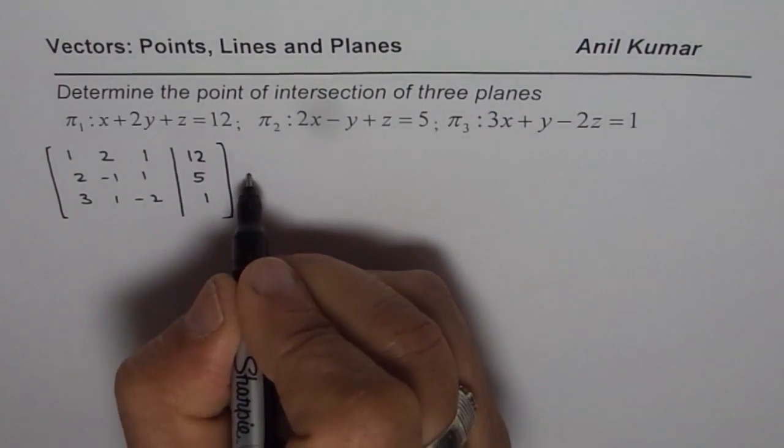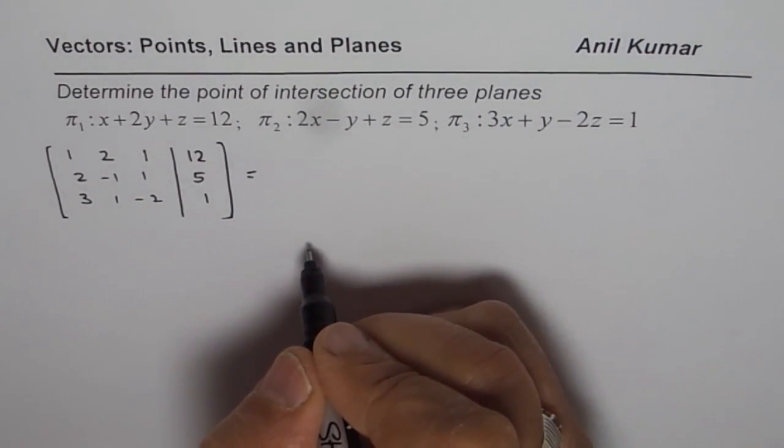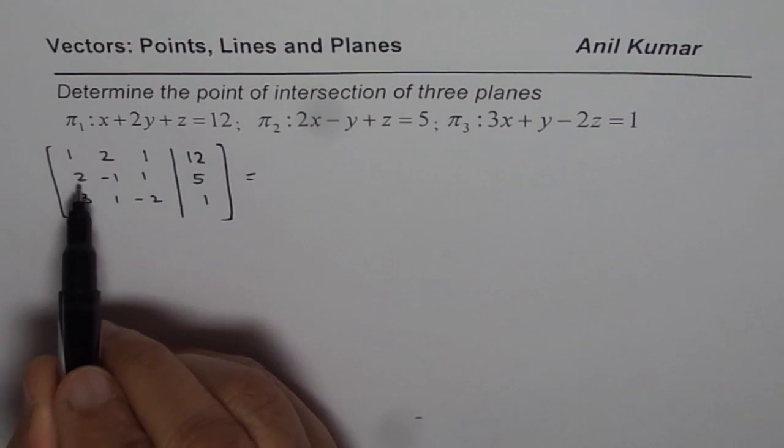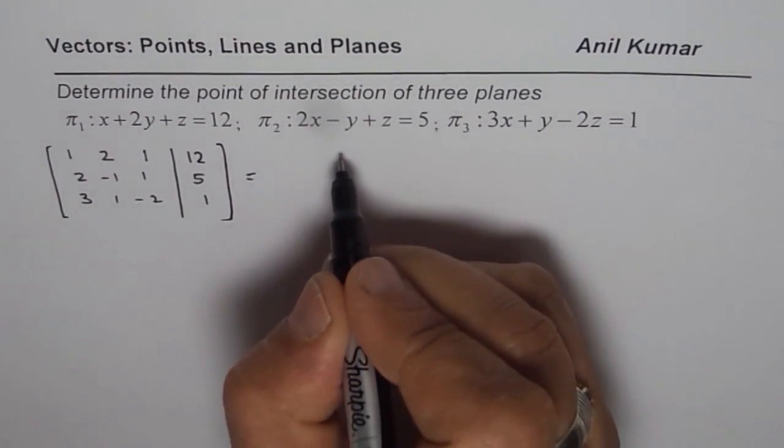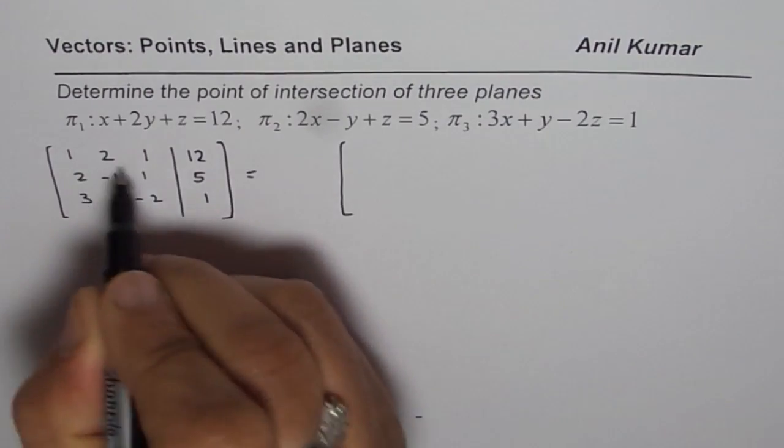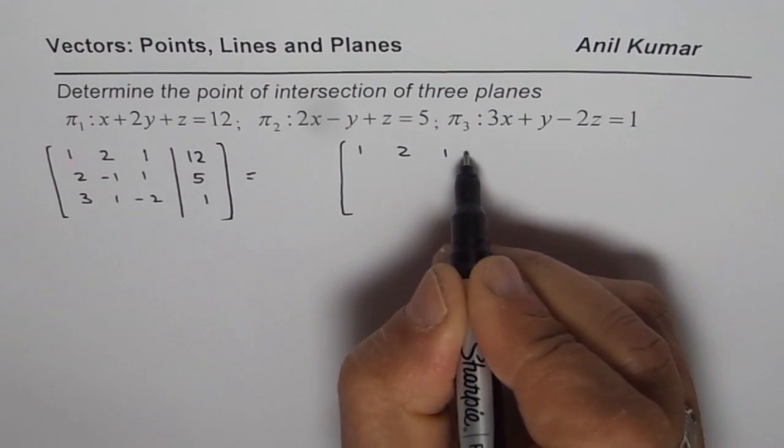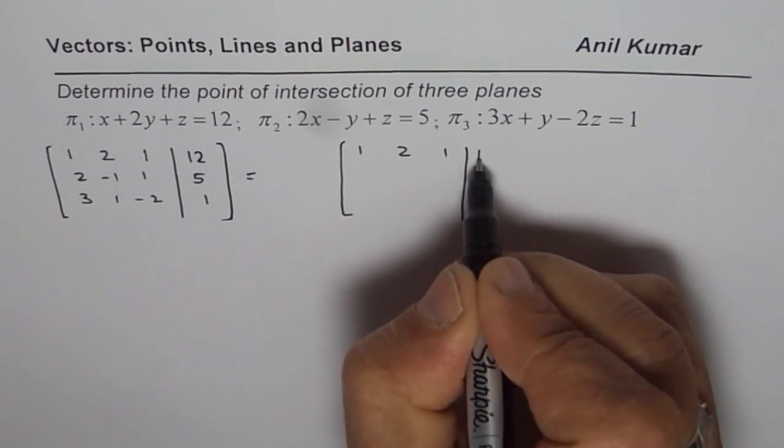Now we will perform elementary row operations to simplify this. An idea is to get zeros in this corner. So how can you get zeros? First row write as such, 1, 2, -1. This is a very standard method. Just perform the way I am doing. It will be very easy to get the solution.